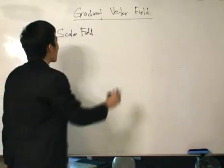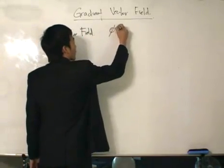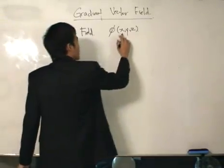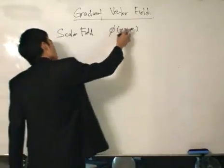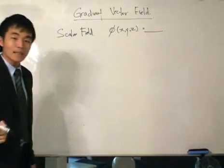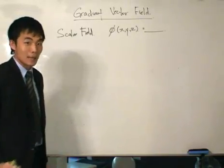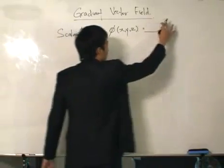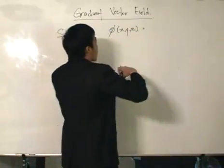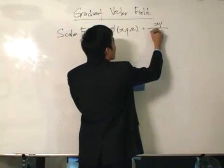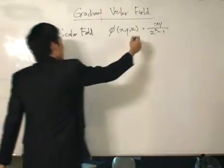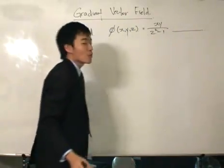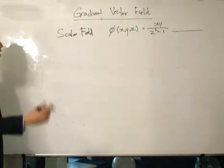A scalar field we like to write as phi(x, y, z). This is the scalar field, meaning you find the values of x, y, and z, put them into this equation, and get a certain scalar number. For example, one such equation would be something like x squared plus y squared plus z squared take away one. We put in a point, get a scalar value — bear in mind there are no vector components.